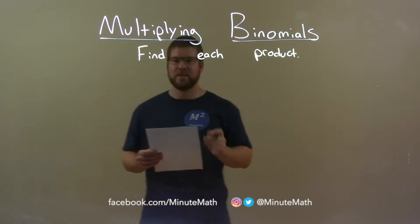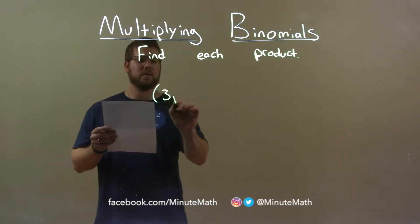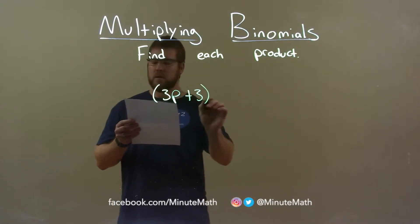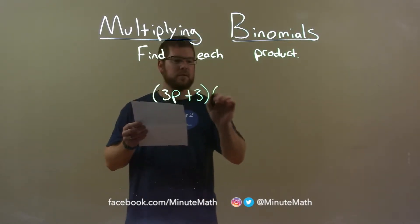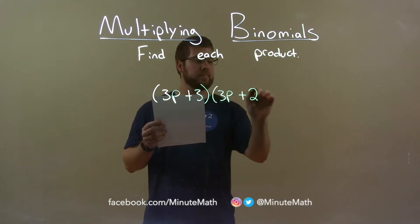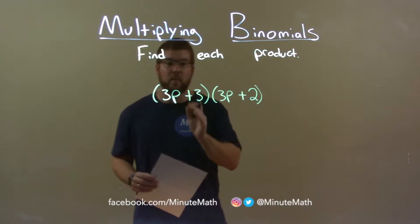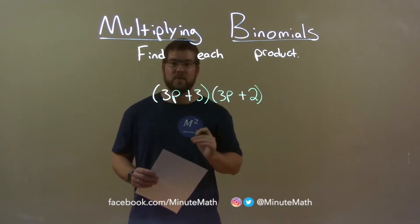If I was given this product, 3p plus 3 multiplied by 3p plus 2, we want to take all parts of our first parenthesis and multiply it by all parts of our second parenthesis.